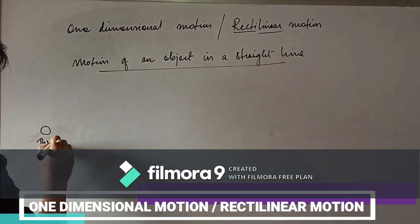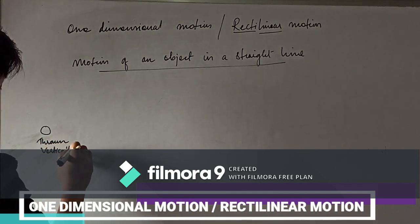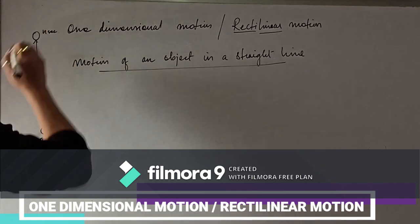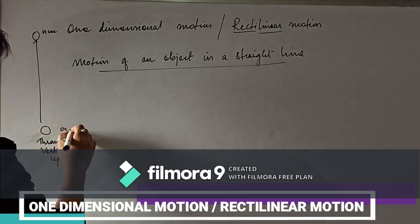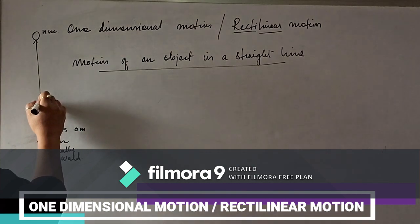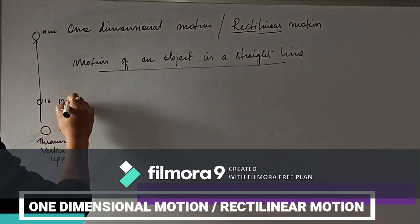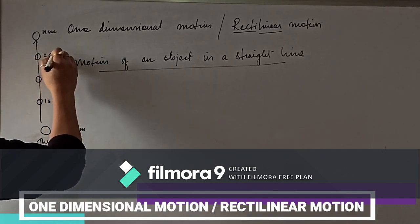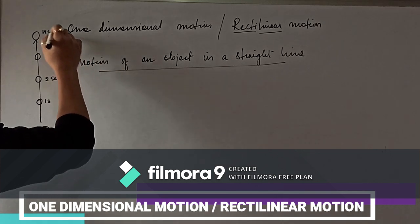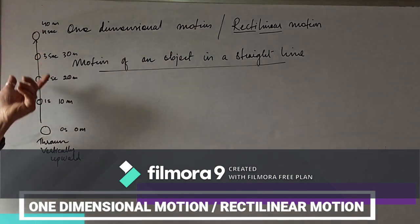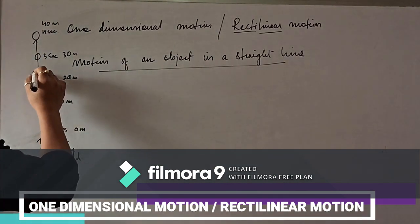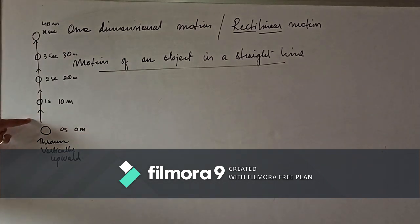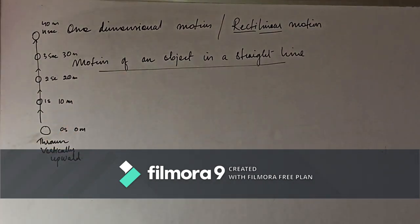Consider a ball thrown vertically upwards. At zero seconds it covers 0 meters; at one second, 10 meters; at two seconds, 20 meters; at three seconds, 30 meters; and at four seconds, 40 meters. The ball travels straight up vertically in a straight line — this is an example of motion in one dimension or rectilinear motion.